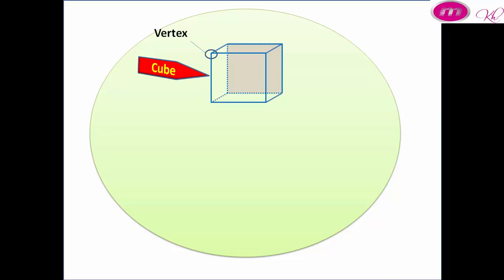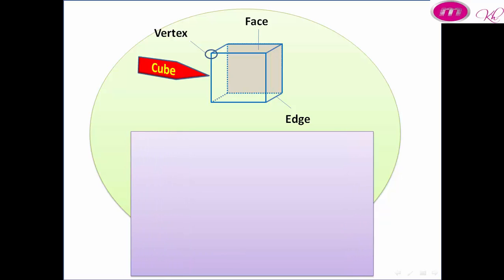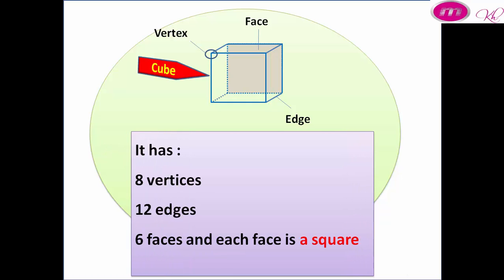We call this vertex, and this edge, and this face. A cube has 8 vertices, 12 edges, 6 faces, and each face is a square.